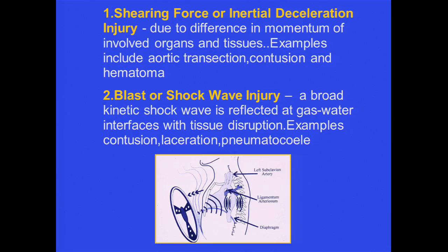On the other hand, we may see blast injuries — terrorist bombings might be a classic example today. This is a broad kinetic shock wave reflecting at gas and water interfaces in the lung with tissue disruption, interstitial rupture, leading to contusion, laceration, and pneumatoceles.